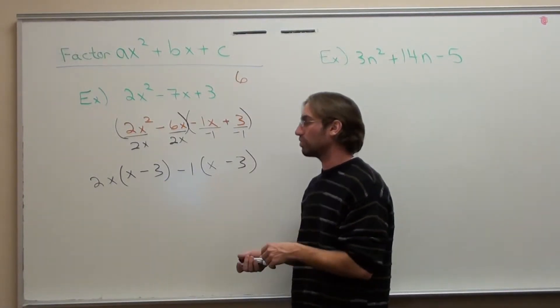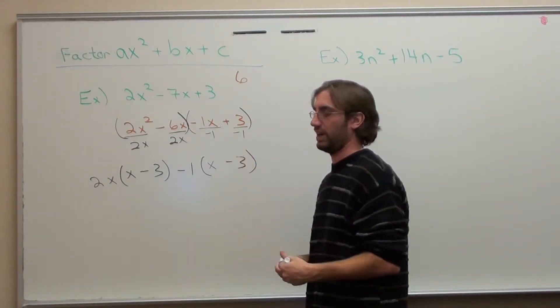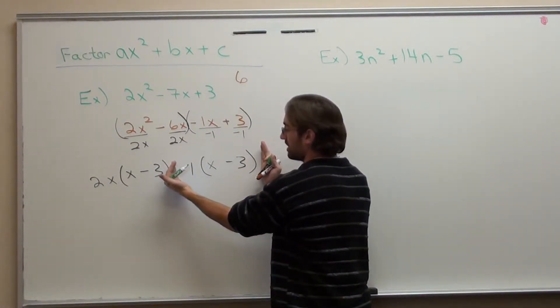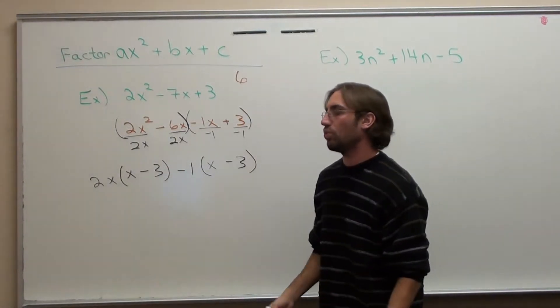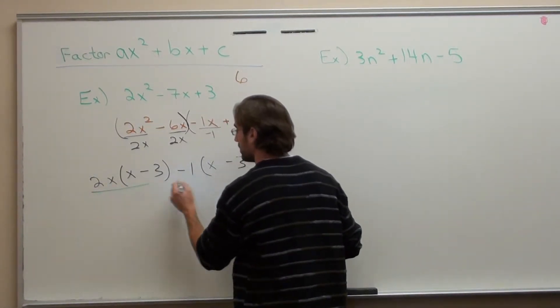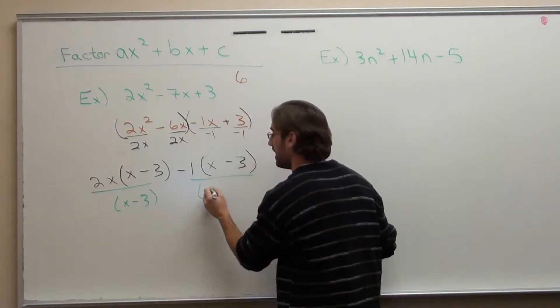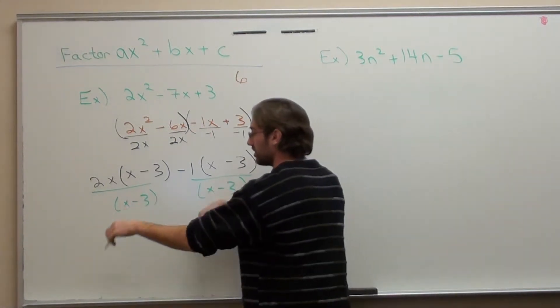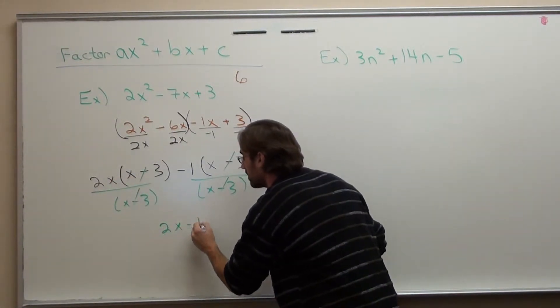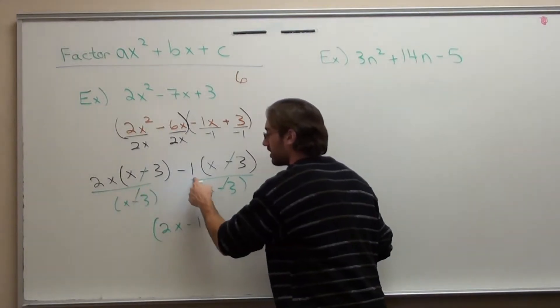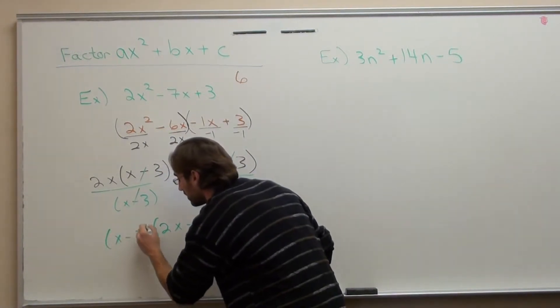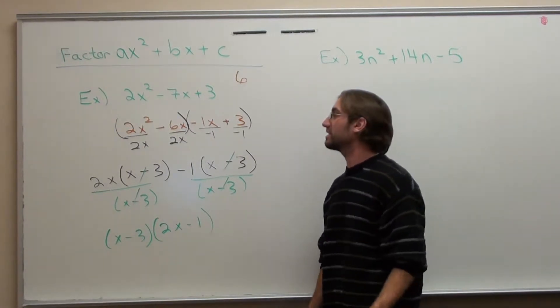That's the whole point. This is called grouping. You are going to factor out a whole group now. This is all one term: 2x times (x - 3). And this is another term: -1 times (x - 3). What do both of these terms have in common? I can divide an (x - 3) out because they both have that in common. So that's what I'm going to take out. What I have left is 2x - 1. But anything that I take out, I have to actually put back in. That's the answer.